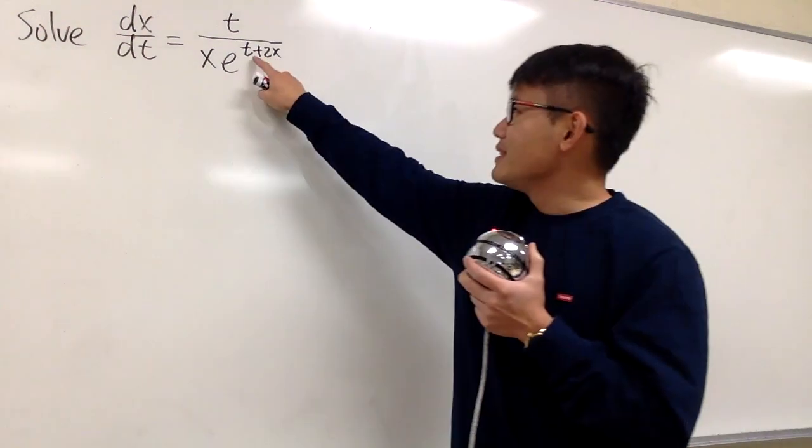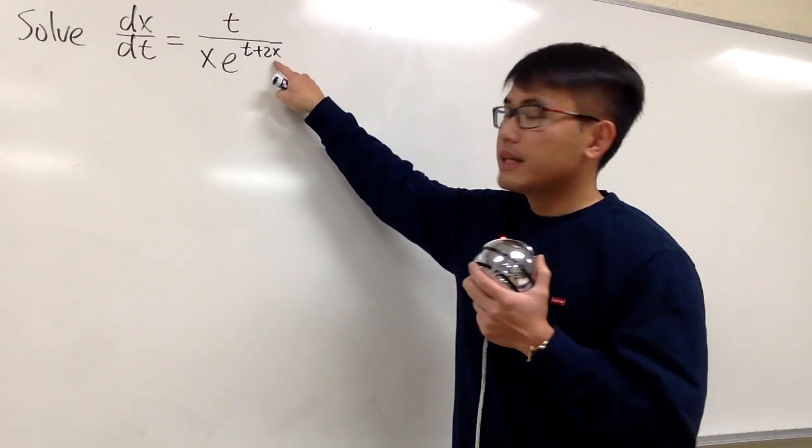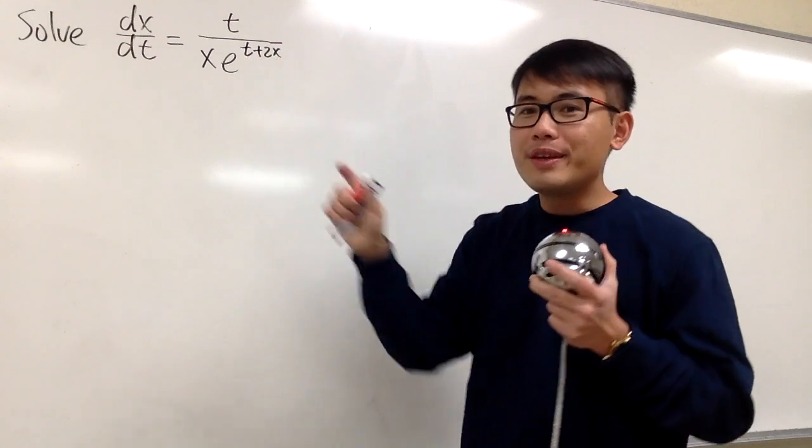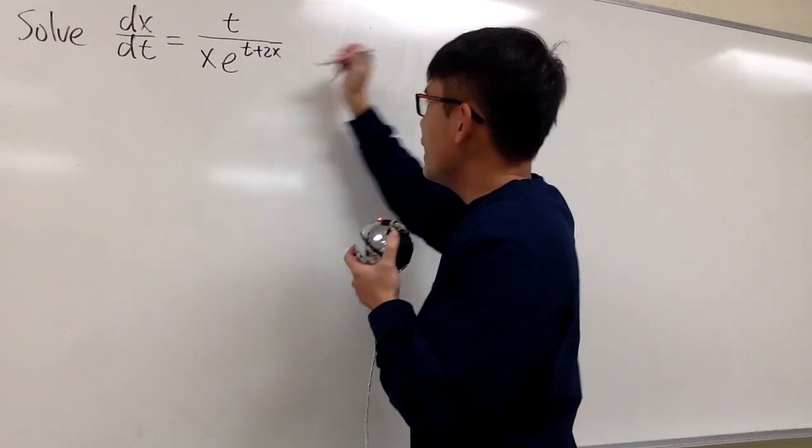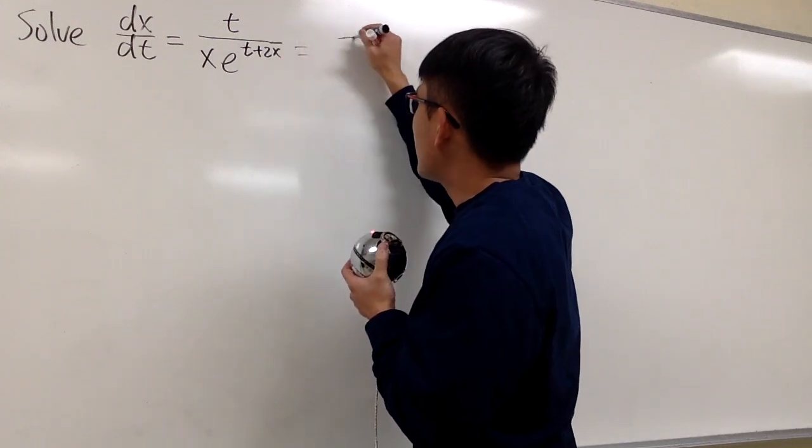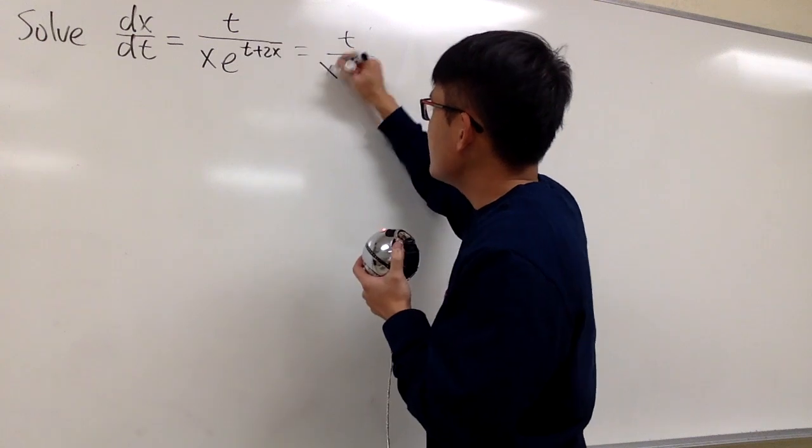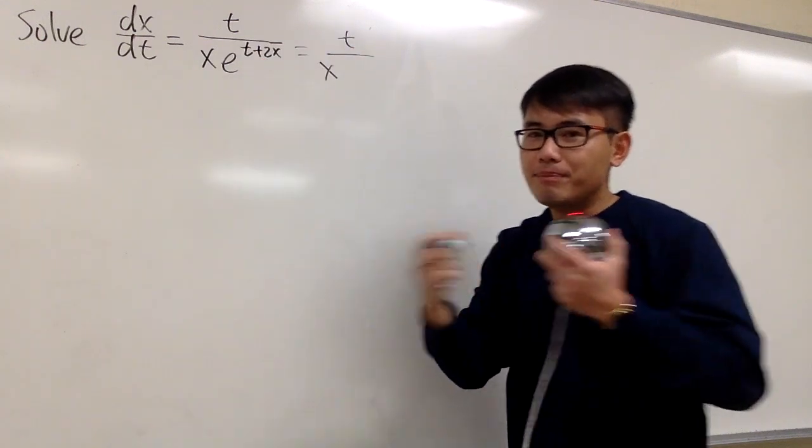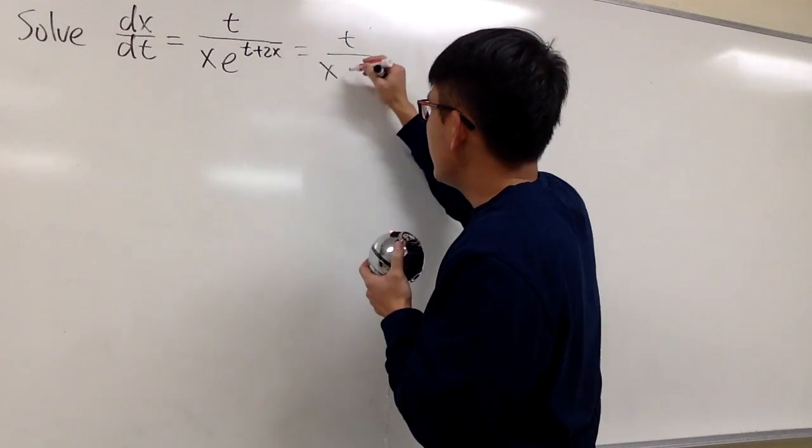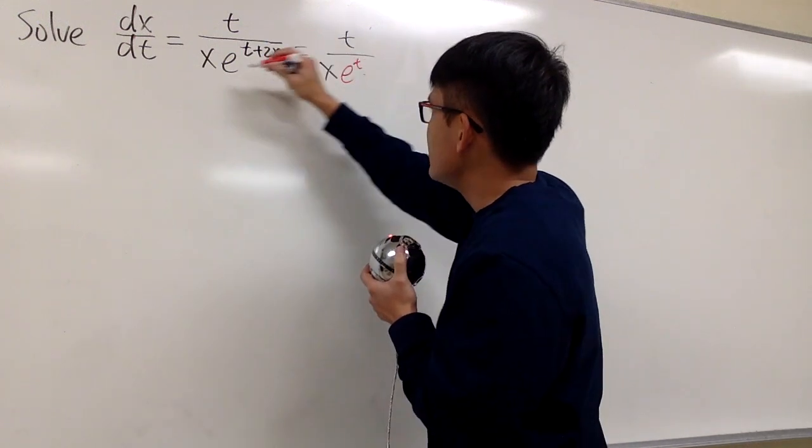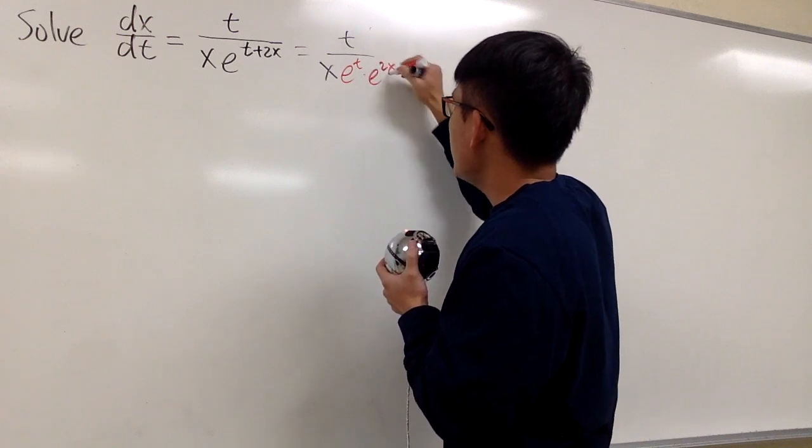Yes, it is, because if you look at t plus 2x, they are in the exponent. We can use one of the rules of exponents. We can separate it. If you look at this as t on the top over x, when you add the exponent, it's the same as multiply e to this, e to that. So I can look at this as e to the t times e to the 2x.